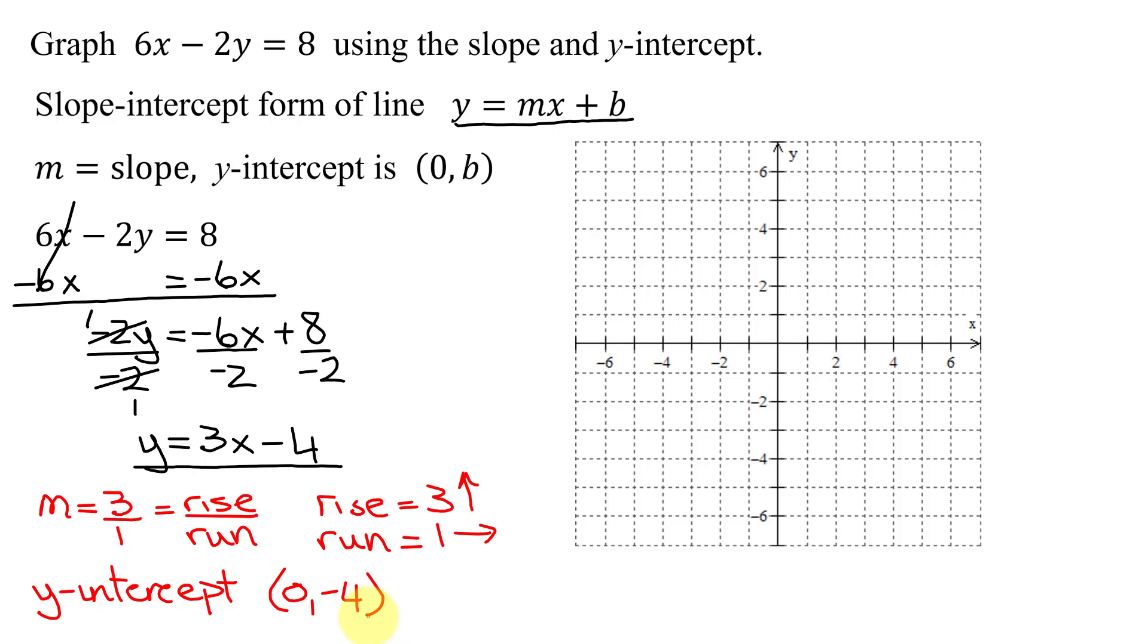So now I'm ready to graph my equation. I'm going to graph the y-intercept first. So start at the origin, x is 0, go nowhere in the x direction, y is negative 4, so go down 4, and there is my y-intercept.